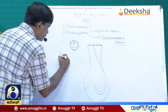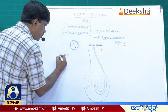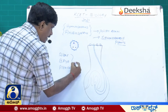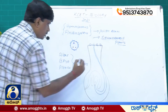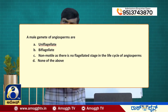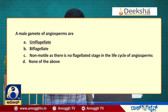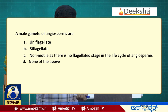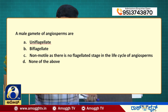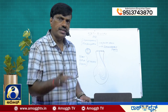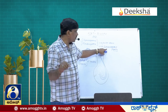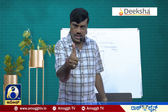In contrast, algae, bryophytes, and pteridophytes have motile male gametes. Gymnosperms and angiosperms have non-motile male gametes because they lack flagella. The answer to the question is C: non-motile. If asked to name the group of plants called siphonogamous plants, the answer is gymnosperms and angiosperms.